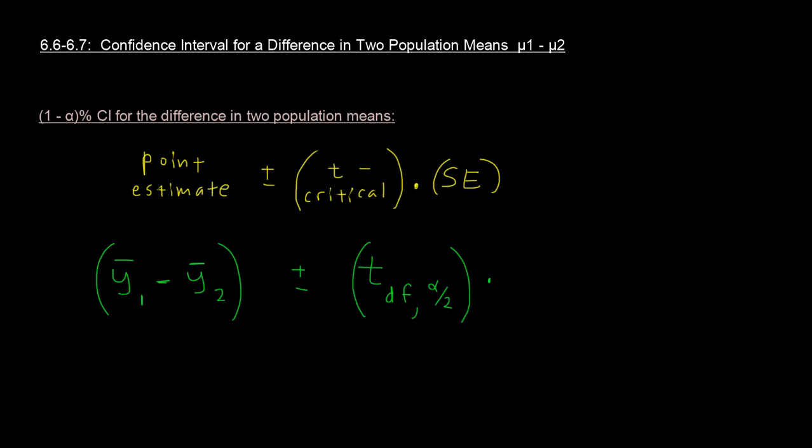Now the standard error, if this was for one population mean, a confidence interval just for one mean, it would just be s over square root of n. Now bear with me here. I'm going to write something a little different. If this was just for one population mean, doesn't that just say s over square root of n? So that would be for one population mean, but we need to integrate a second population mean. So I'm going to extend my square root symbol out just a little bit more, and we're going to add another s squared over n.